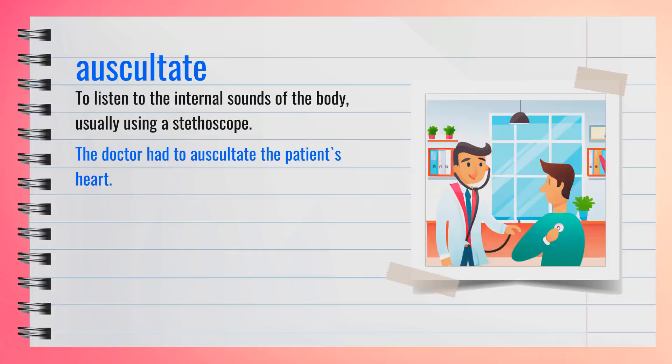The word auscultate, spelled A-U-S-C-U-L-T-A-T-E, is a verb. It means to listen to the internal sounds of the body, usually using a stethoscope. For example, the doctor had to auscultate the patient's heart. In summary, auscultate means to listen to someone's internal body sounds.